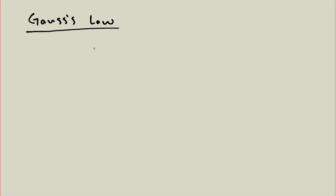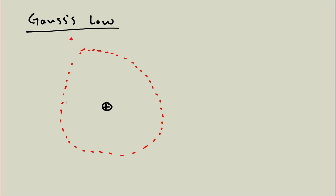To motivate the idea behind this law, I'm going to imagine that I have a positive charge, and around this positive charge I'm going to draw a surface. This is just an imaginary surface — there's no actual stuff there, I've just drawn it in space, and to emphasize how imaginary it is I'm going to draw it as a dotted line. To emphasize that this is a three-dimensional surface, I'm going to draw an equator on it — that's a thing people often do to indicate this is not just a circle but a three-dimensional surface in space that is completely surrounding this charge.